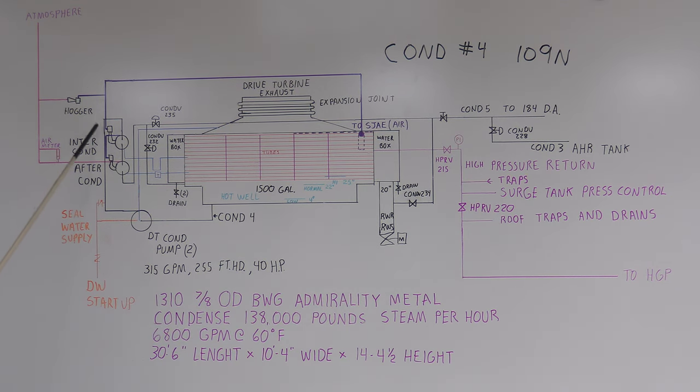It goes to the hogger that would use for startup. This uses steam pressure coming across and sent to atmosphere to pull a vacuum quick. We did a video on how the steam jet air ejectors worked a while back. It went to the first stage inner condenser - this pulled the vacuum. It had steam pressure coming in the top of the steam jet that created a vacuum.